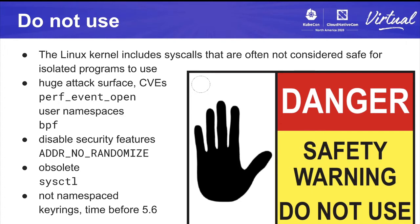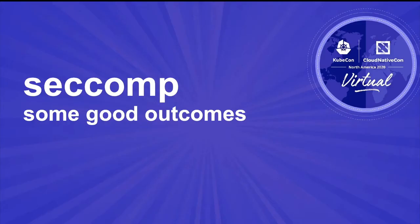Some syscalls can disable security features — for example, prctl with PR_SET_NO_RANDOMIZE basically disables ASLR (address space layout randomization), which is a security feature added for good reasons, but applications can simply turn it off. Some things are obsolete, like the syscall-based sysctl interface, which Linux has generally deprecated for some decades and has some attack surface. And some things haven't been namespaced — time namespaces are very new, and keyring namespaces don't exist yet, so in a container system it makes sense to remove the ability of applications to use them.